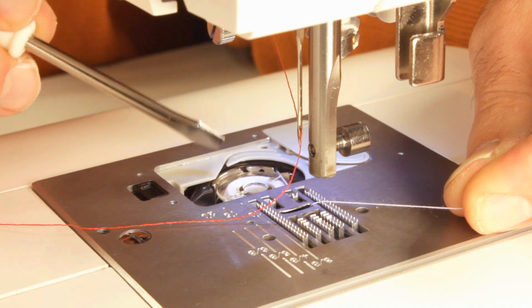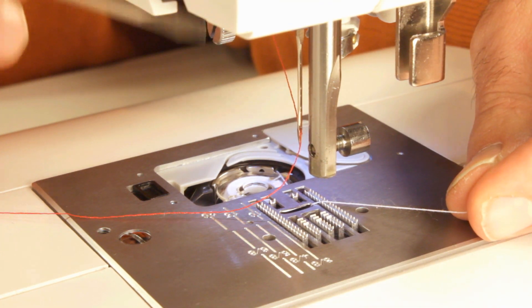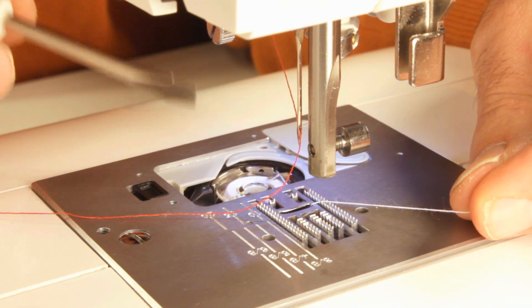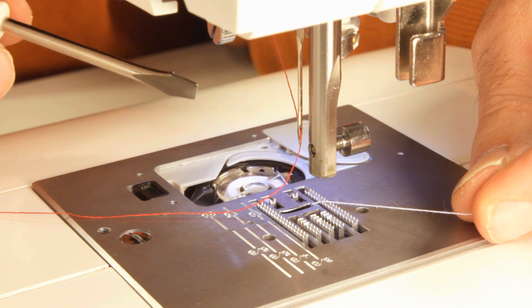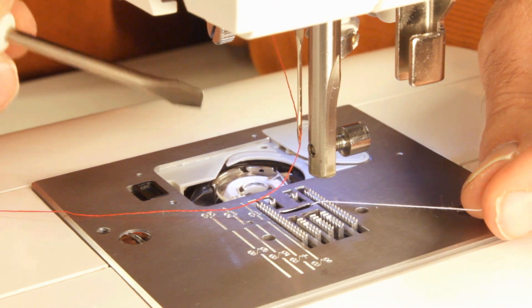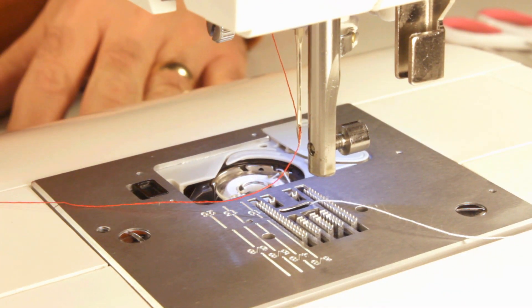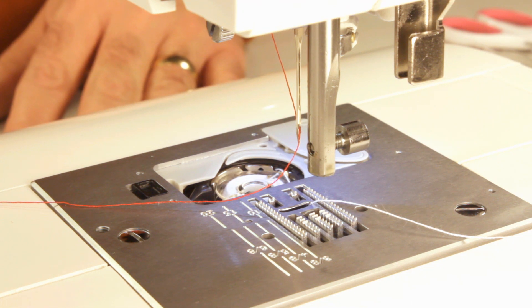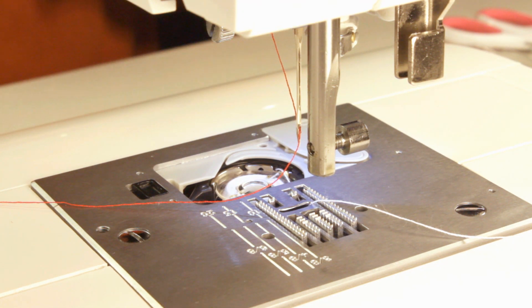Pay attention to that. Now I'm going to change out to a heavier weight thread. We're going to change out to the nylon thread. It's upholstery weight thread. We're going to do the same thing and I'll show you the difference and what it does incorrectly and then how to correct it.